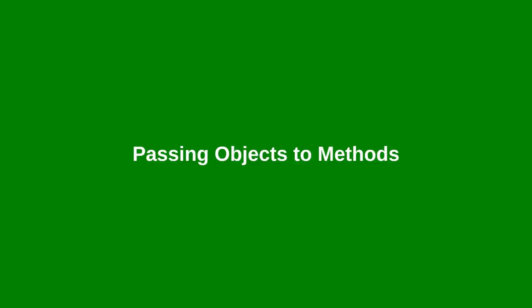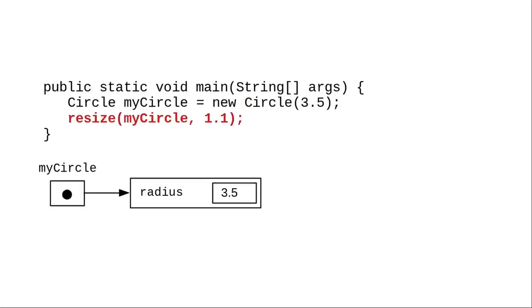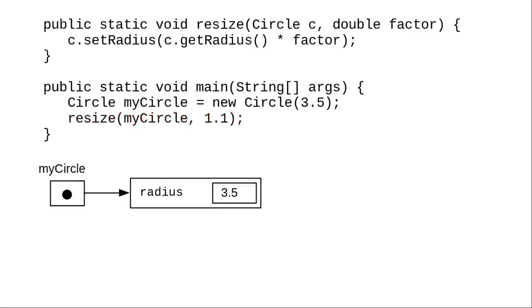Let's consider this code that creates a circle object with a radius property. We'd like to pass it to a method that will resize it by a given factor. Here's the code for that resize method.